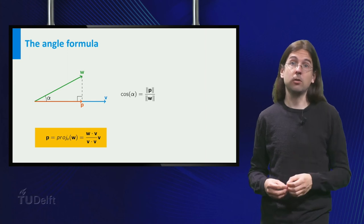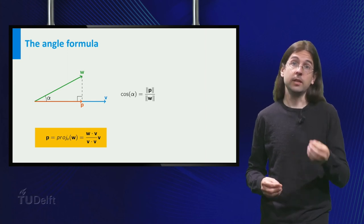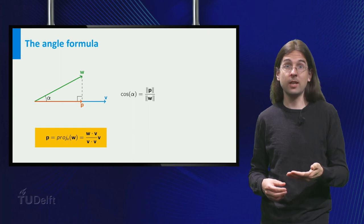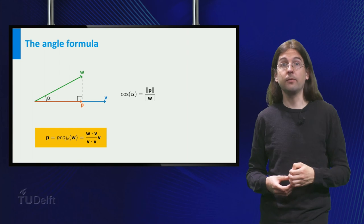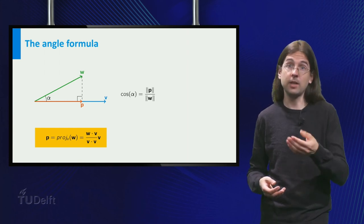Recall we have two vectors v and w and draw a right angle triangle by projecting w onto v. The cosine of the angle between v and w then equals the length of the adjacent side, that is the length of the vector p, divided by the length of the hypotenuse, the length of w.